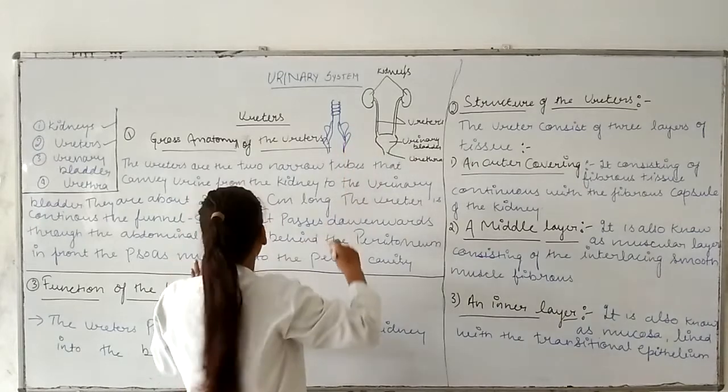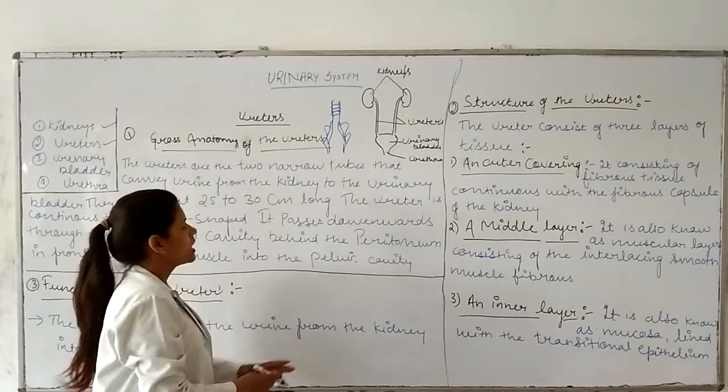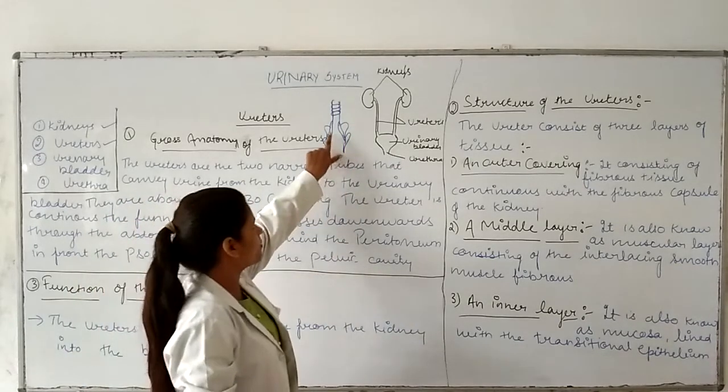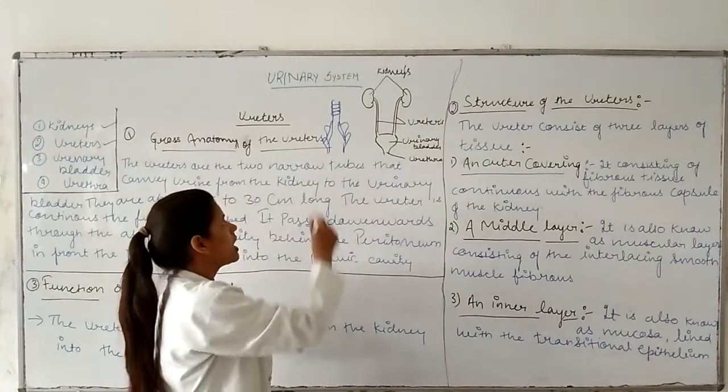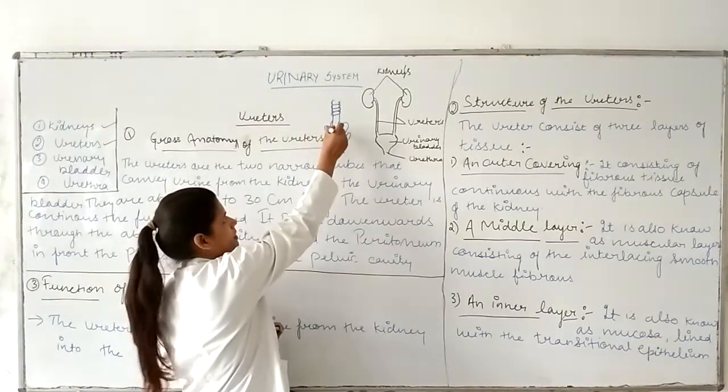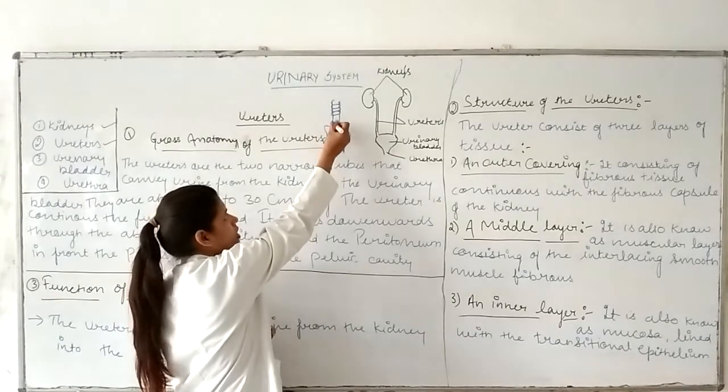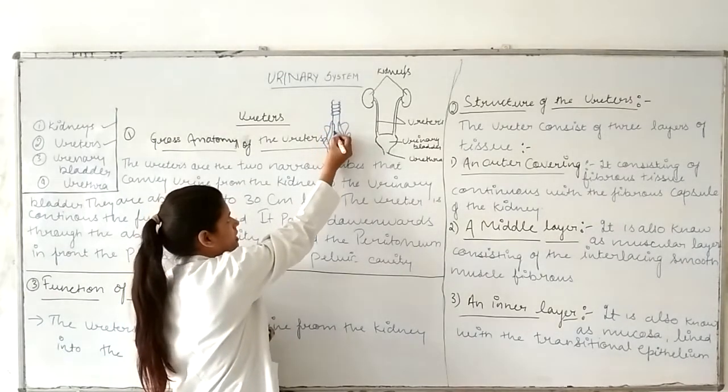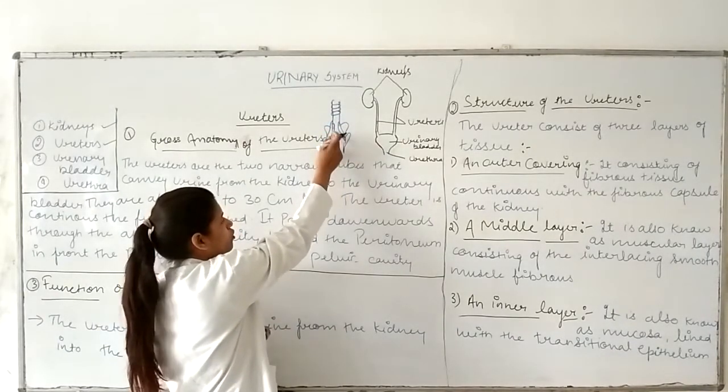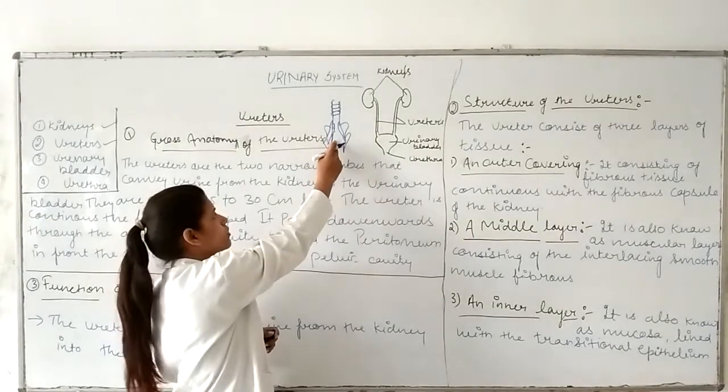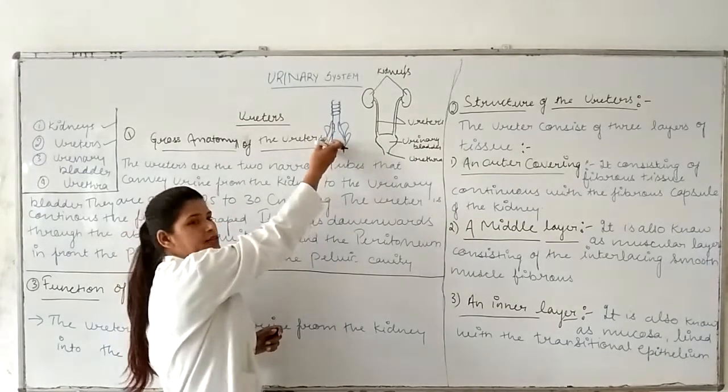These are the psoas muscles. The psoas major muscles are present. These are the psoas muscles which are on the front side.